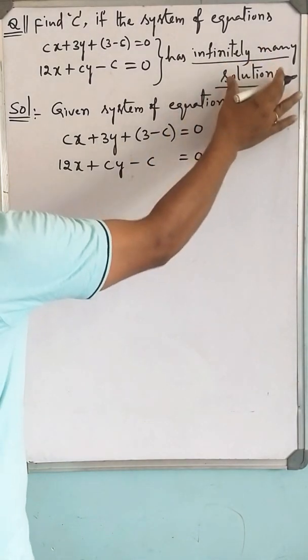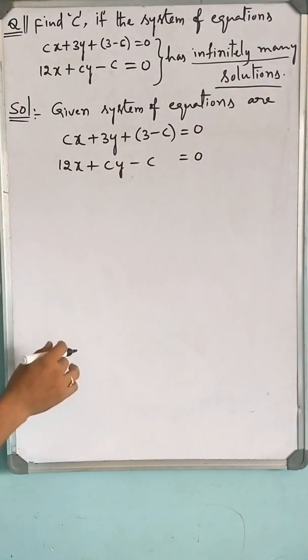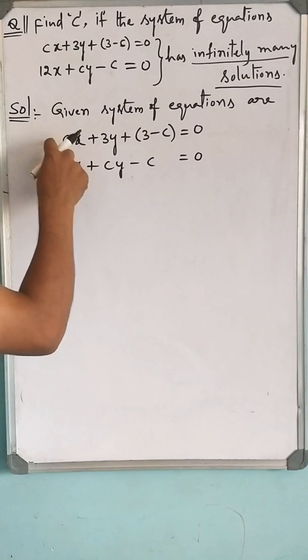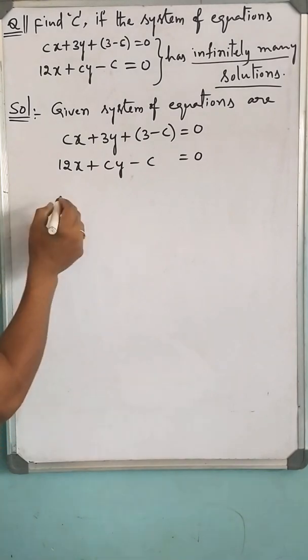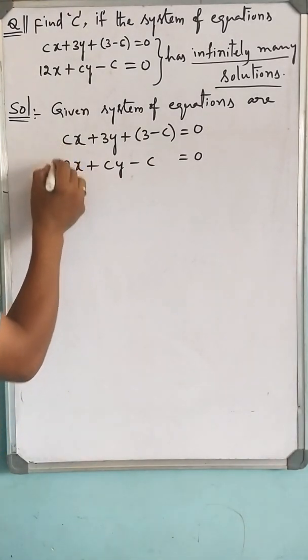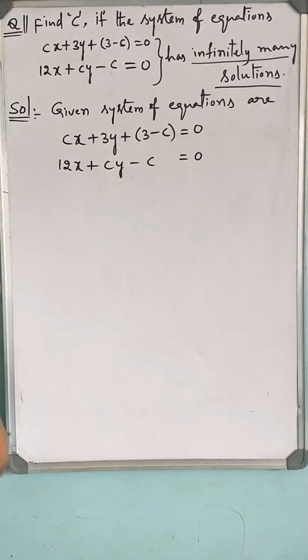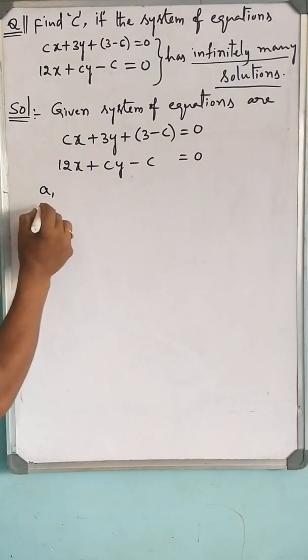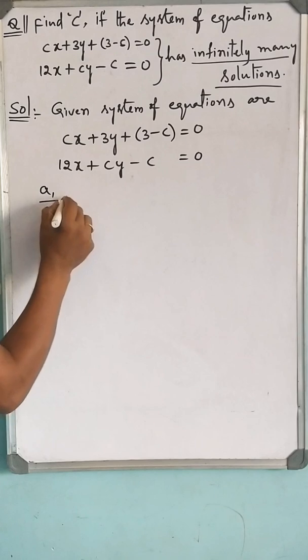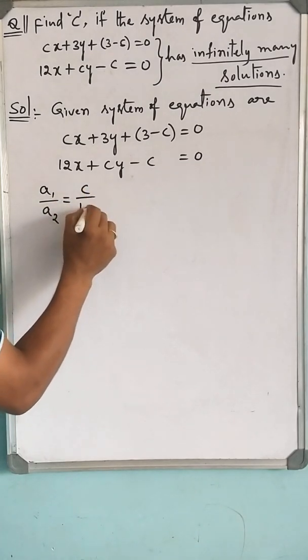To have infinitely many solutions, the ratio of x coefficients and y coefficients and constants must be equal. So, you know how to represent the ratio of x coefficients by A1 by A2. The ratio of x coefficients is equal to C by 12.